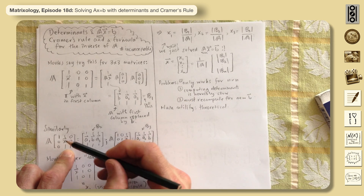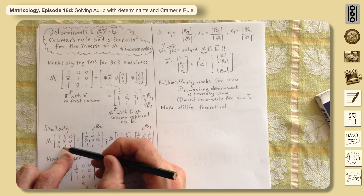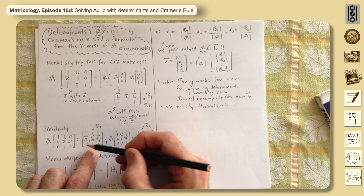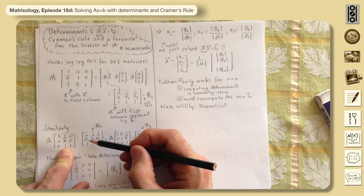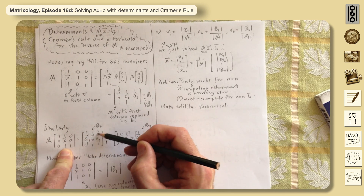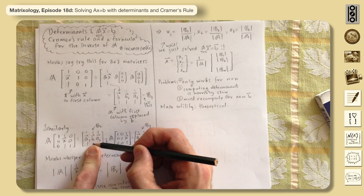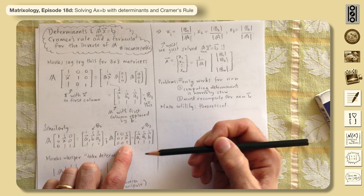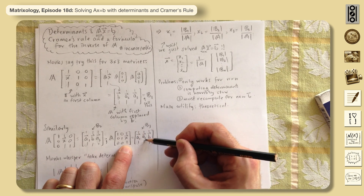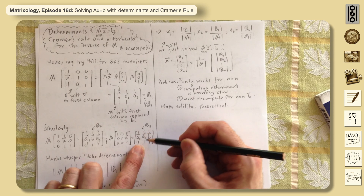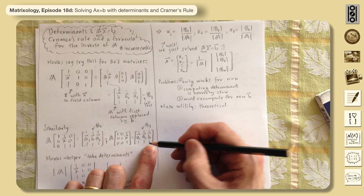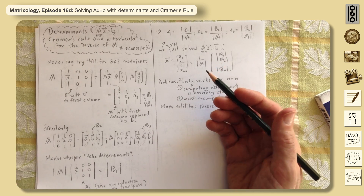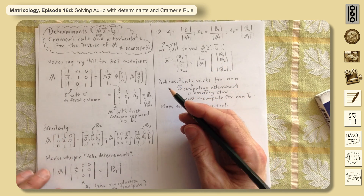We do the same for the other columns. Replace the second column of the identity with x: it'll look mostly like A but with the second column replaced by b. In the third case, x goes in the third column, so we get A with a1, a2 as the first two columns and the last column a3 replaced by b.